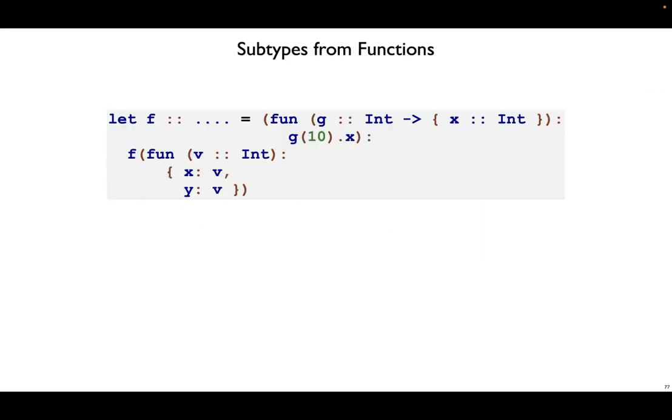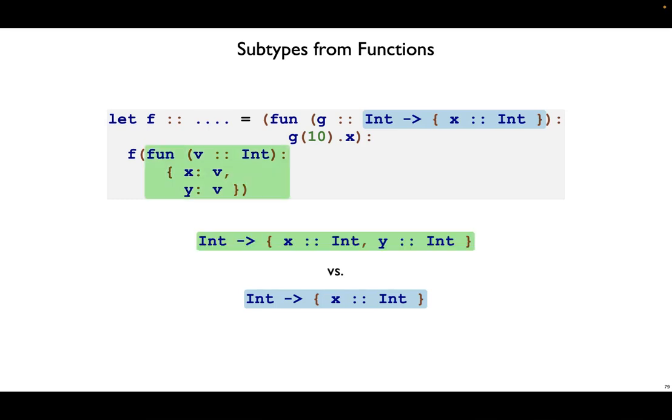To turn this example into code, we've got a function f which is looking for a function g. That function g should take in an int and then return a record where x maps to int. Down below we call f and we give it this other function. This one takes an int and returns a record with two fields, x mapped to int and y mapped to int. That green type should be compatible with the blue type, but right now it is not a subtype.